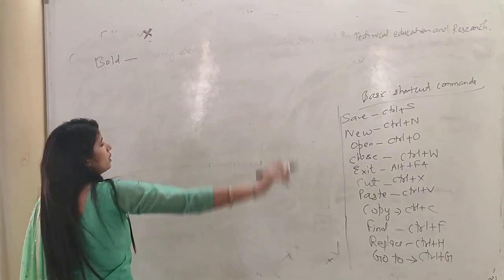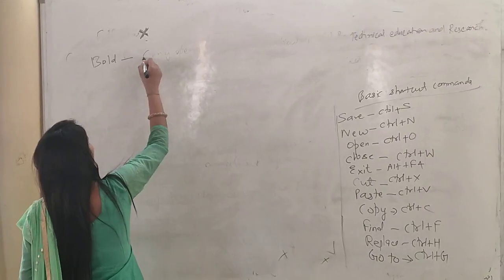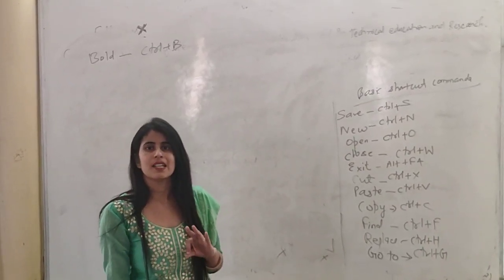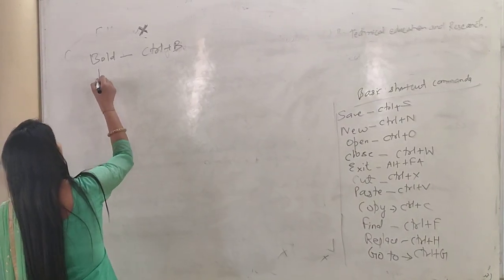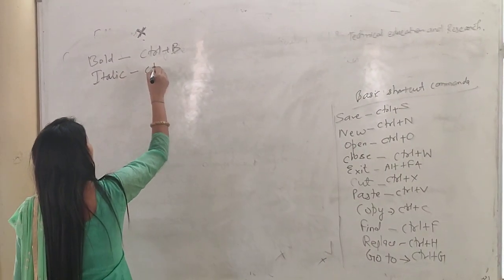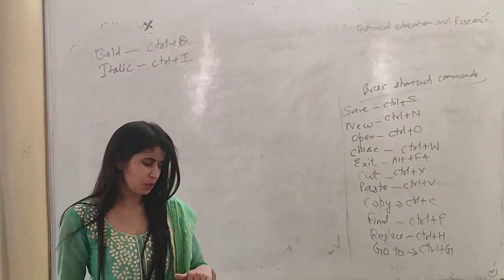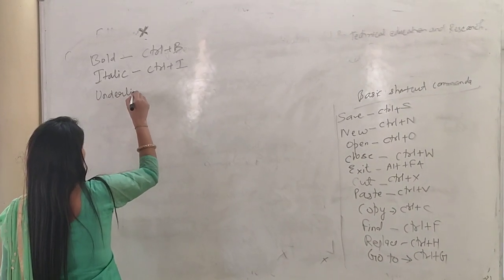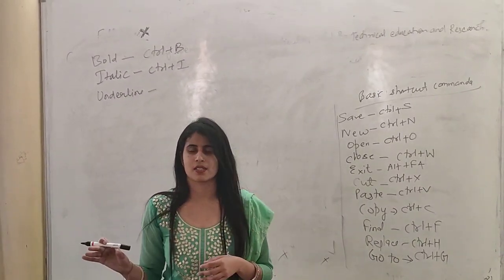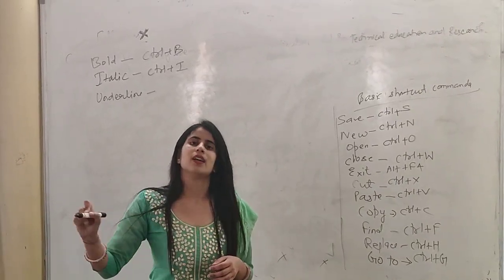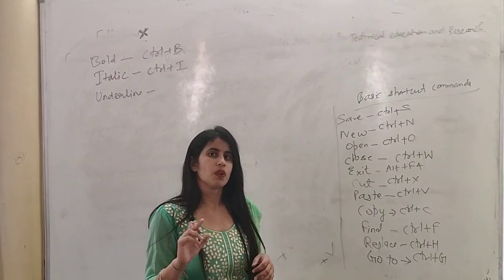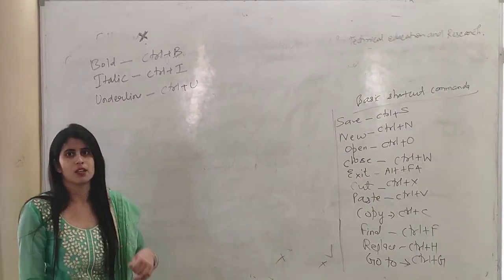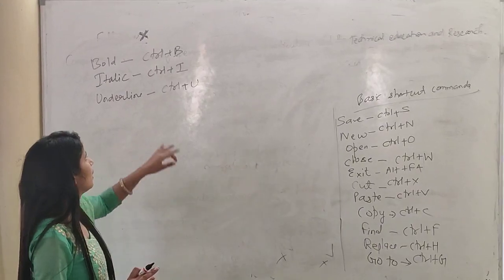Other shortcut commands: If any data is darkened and the width increases, that is known as Bold — use Control+B. If you want to make the text Italic, use Control+I. Next is Underline — if you want to draw a horizontal line under the text, use Control+U. Bold, Italic, Underline — these are all text formatting options.